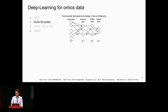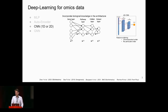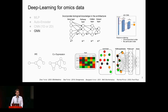Inspired by successes in imaging, CNNs have also been explored on omics data. The idea is to order the gene expression profile based on some knowledge or genomic position and apply a one-dimensional convolutional window to it. The problem with the CNN approach is that interactions detected are only specific to the convolutional window; you cannot detect long-range interactions between features.